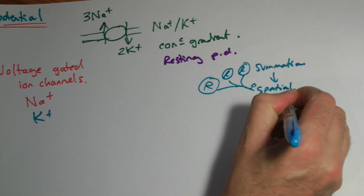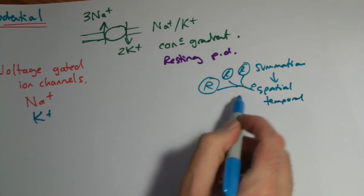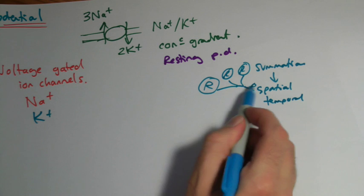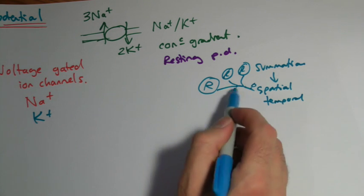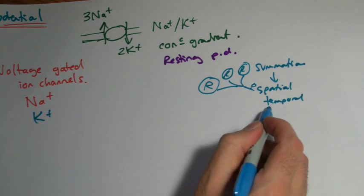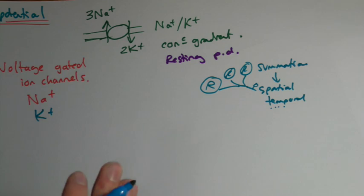Or the temporal summation, which is the idea that it's not enough just to get a signal, an impulse. You have to get a certain frequency of them. You have to have a certain number in a certain amount of time. That's what the temporal bit means - it has to do with time.